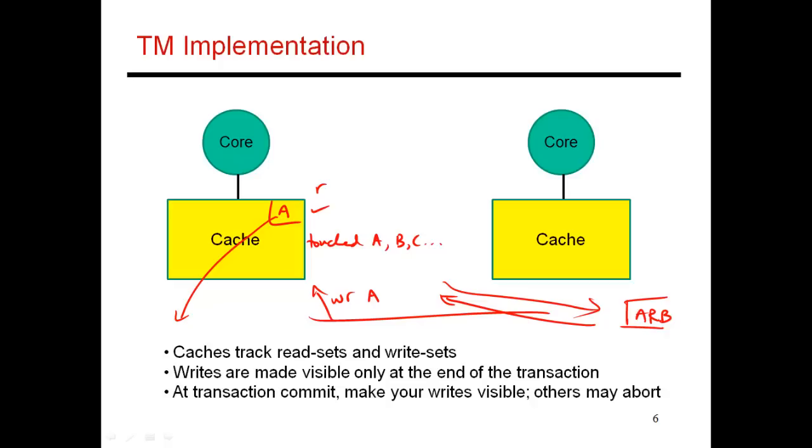So this essentially locks everybody else from committing their own transactions. They can still make forward progress, but when they get to the end and when they try to do their commit, they won't be able to do it until this first transaction performs its commit and releases the token back to the arbiter.